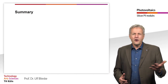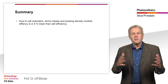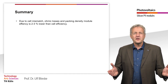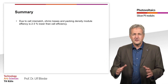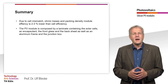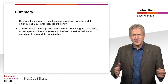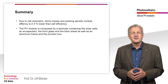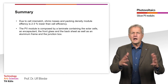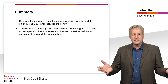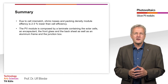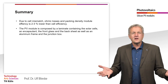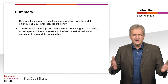To summarize, we have learned in this learning unit that PV modules have a somewhat lower efficiency than the cells themselves, due to a mismatch of the cells, additional ohmic losses in the cell connectors, and the packaging density of the cells. The core of the PV module is a laminate consisting of the solar cells, an encapsulant material, a front glass, and a backsheet. In addition to the laminate, the module also consists of a frame and a junction box. With this unit, we thus conclude the chapter on crystalline silicon solar modules.